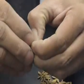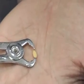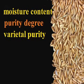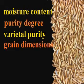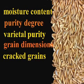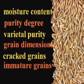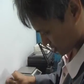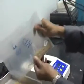Seven interrelated features determine the quality of paddy. These are moisture content of paddy, purity degree, varietal purity, grain dimensions, cracked grains, immature grains, and damaged grains. Now, let's look closely at each characteristic.